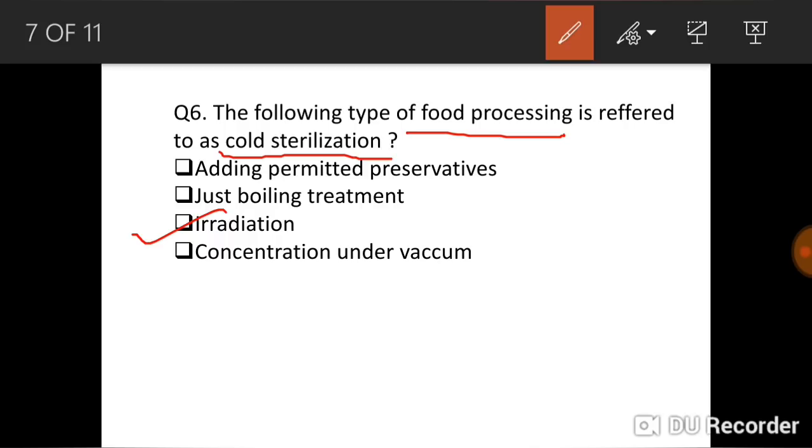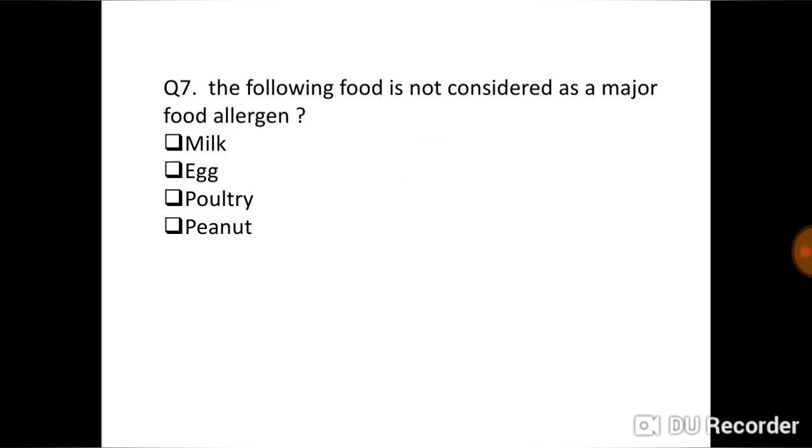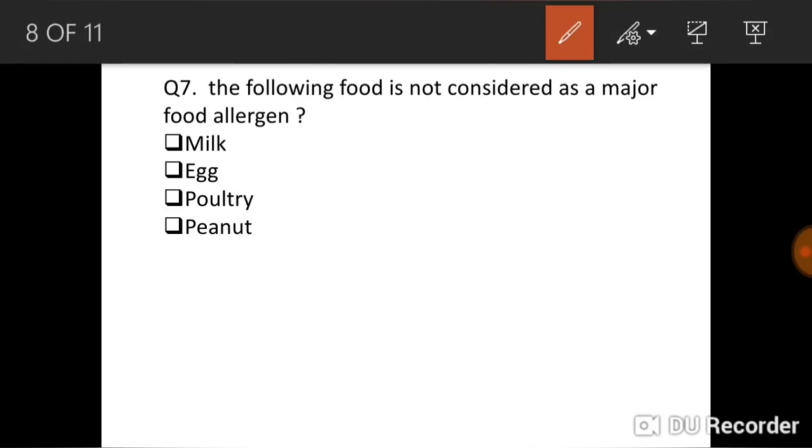The following food is not considered as a major food allergen. I had already completed the whole topic of food allergen in my separate video on food allergen. So the food allergens are milk, egg, and peanut. So poultry is not considered as a major food allergen. There are eight major food allergens. Poultry is not considered in that. Milk, egg, and peanuts, these three are considered in the eight major food allergens.